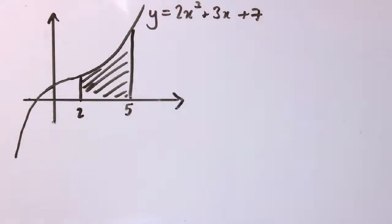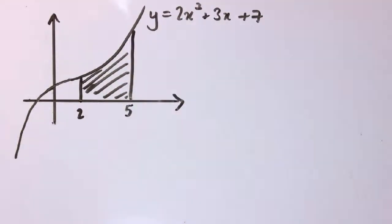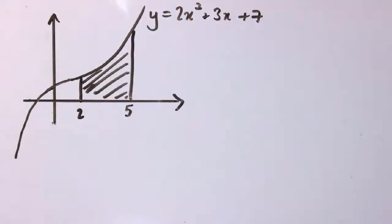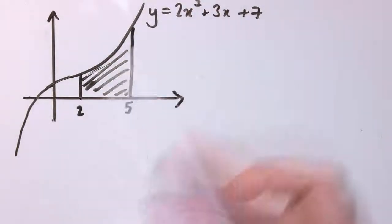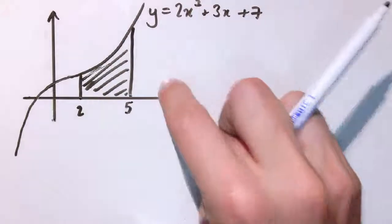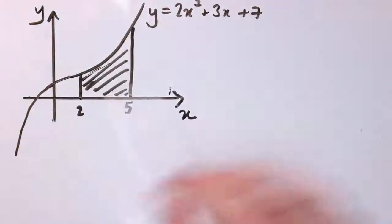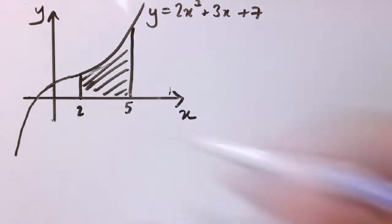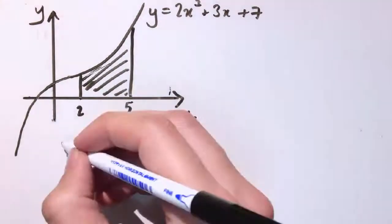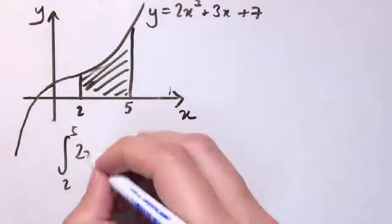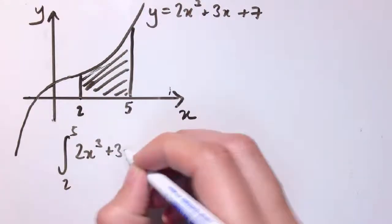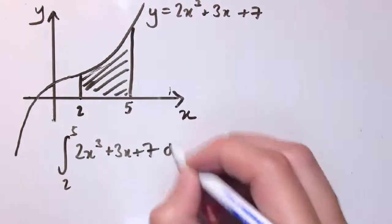The remarkable thing is that this works for all different functions. Here I've got y = 2x³ + 3x + 7, and I want the area underneath the curve, between the curve and the x-axis, between x = 2 and x = 5. So I'll evaluate the definite integral from 2 to 5 of 2x³ + 3x + 7 with respect to x.